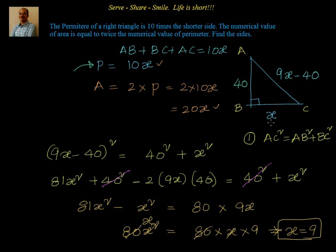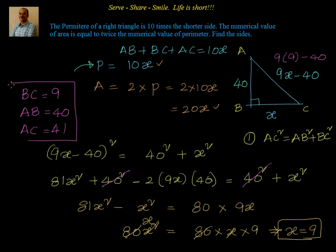With x equal to 9 units, we can find all sides. BC equals x equals 9 units. AB equals 40 units. AC equals 9x minus 40, which is 9 into 9 minus 40, equals 81 minus 40, equals 41 units. So the sides of this right triangle are 9, 40, and 41. That's an interesting example. I'll catch you again with another one — thanks for your support, keep smiling, bye for now.